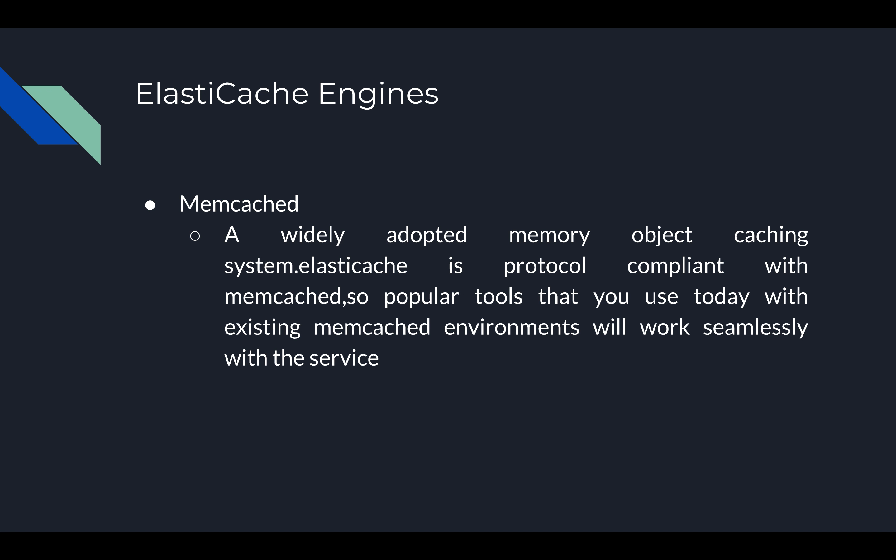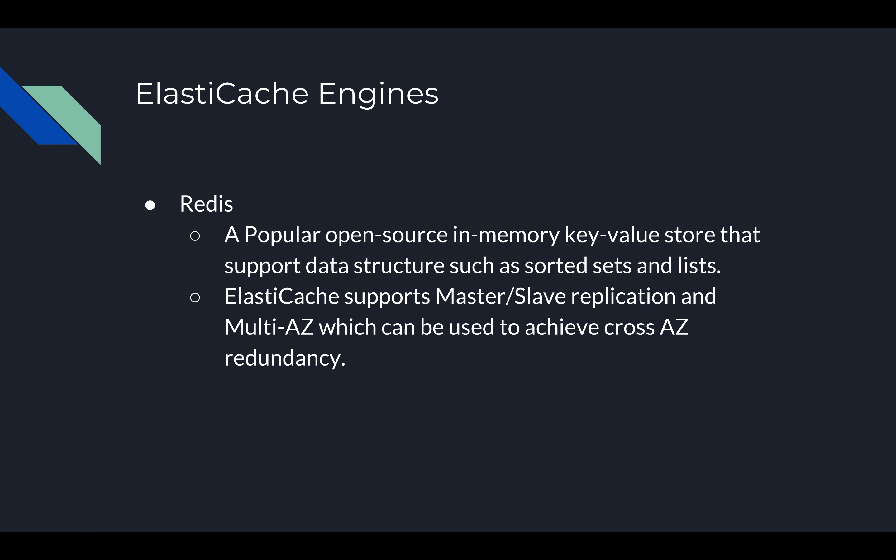There are two types of engines in ElastiCache: Memcached and Redis. Memcached is a widely adopted memory object caching system. ElastiCache is protocol-compliant with Memcached, so popular tools used with existing Memcached environments will work seamlessly with the service. It is a very popular tool and it is easy to migrate with your running applications.